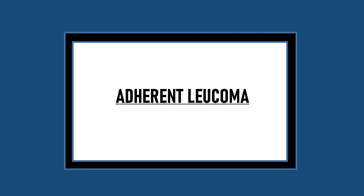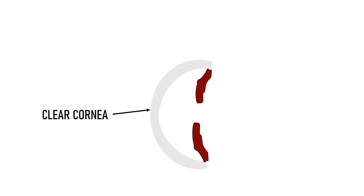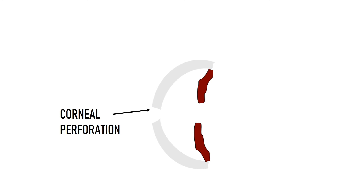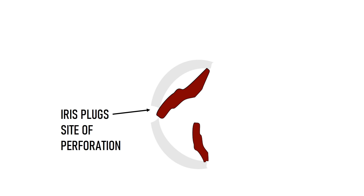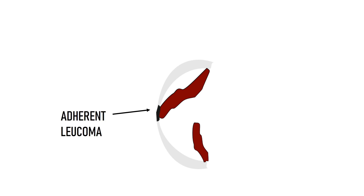Another term frequently encountered when discussing corneal opacities is Adherent Leucoma. 'Adherent' means two things are stuck to each other — in Adherent Leucoma, the iris is adhered or stuck to the back surface of the cornea. In cases of corneal ulcer, when infiltration and inflammation reach the deeper layers of the cornea, involving the entire stromal thickness and reaching up to Descemet's membrane, it leads to corneal perforation. When perforation occurs, aqueous humor gushes out through the wound, dragging the iris along with it. A part of the iris plugs the area of perforation, and when healing and fibrosis occur with the iris still plugging the cornea, it forms an Adherent Leucoma — essentially a healed perforation with iris incarceration.